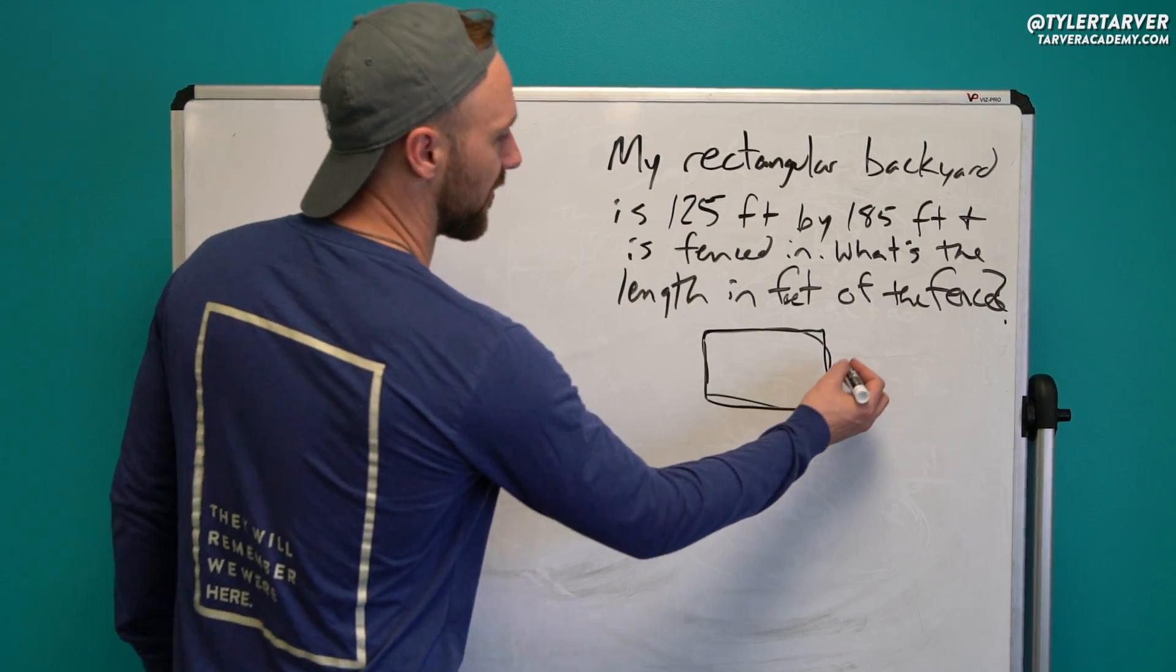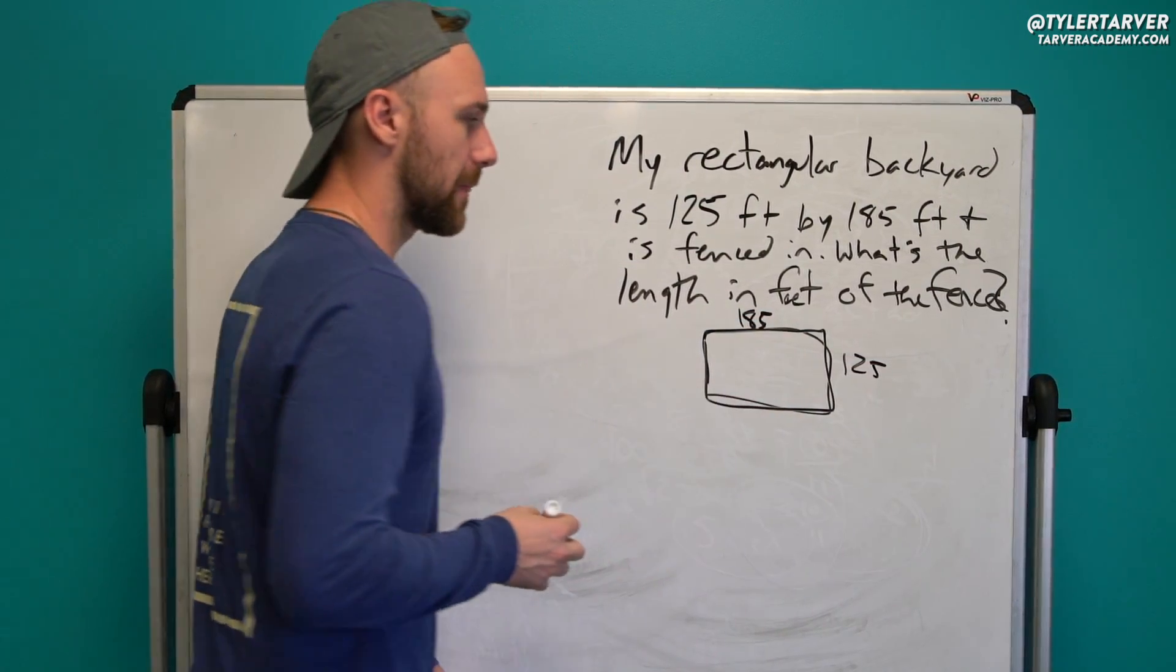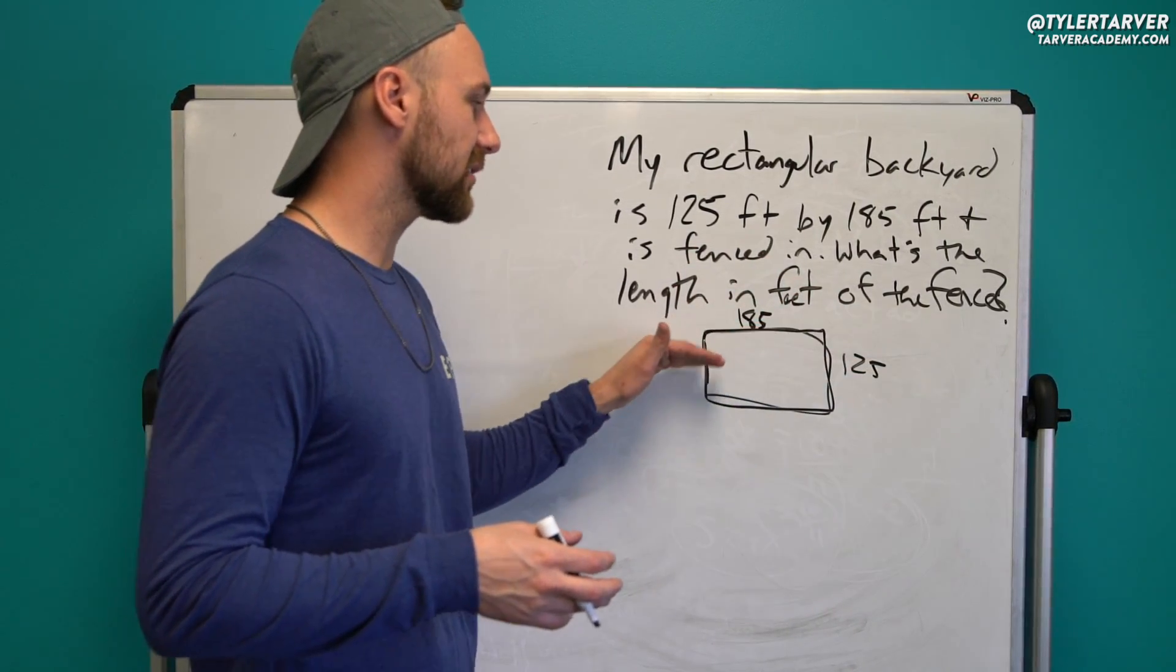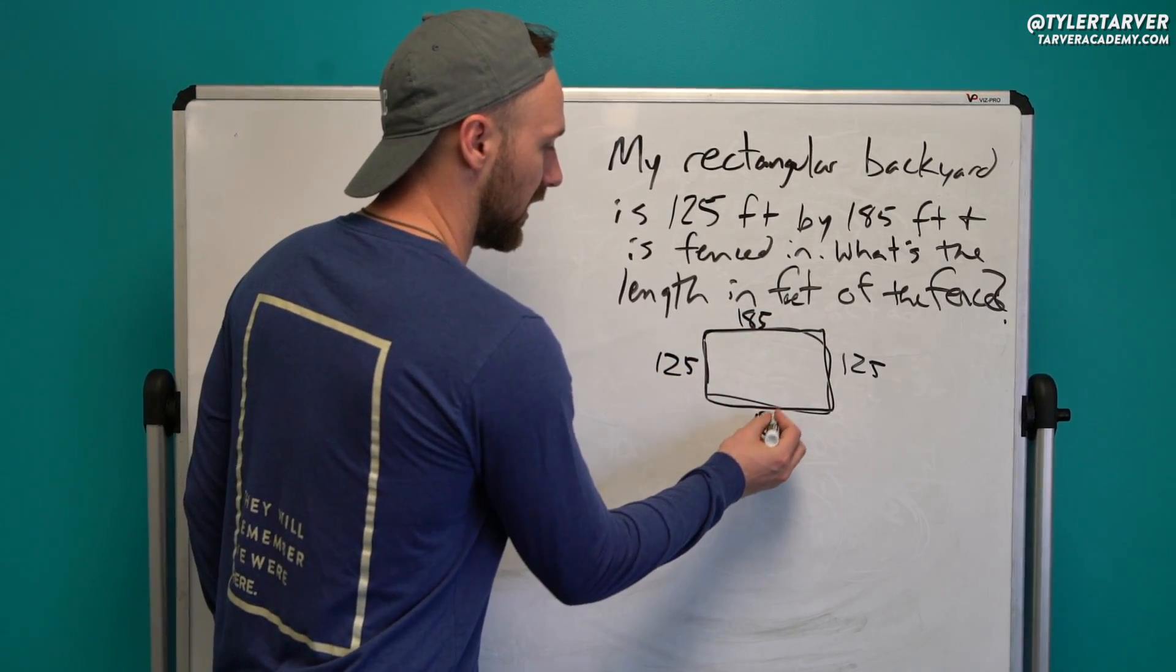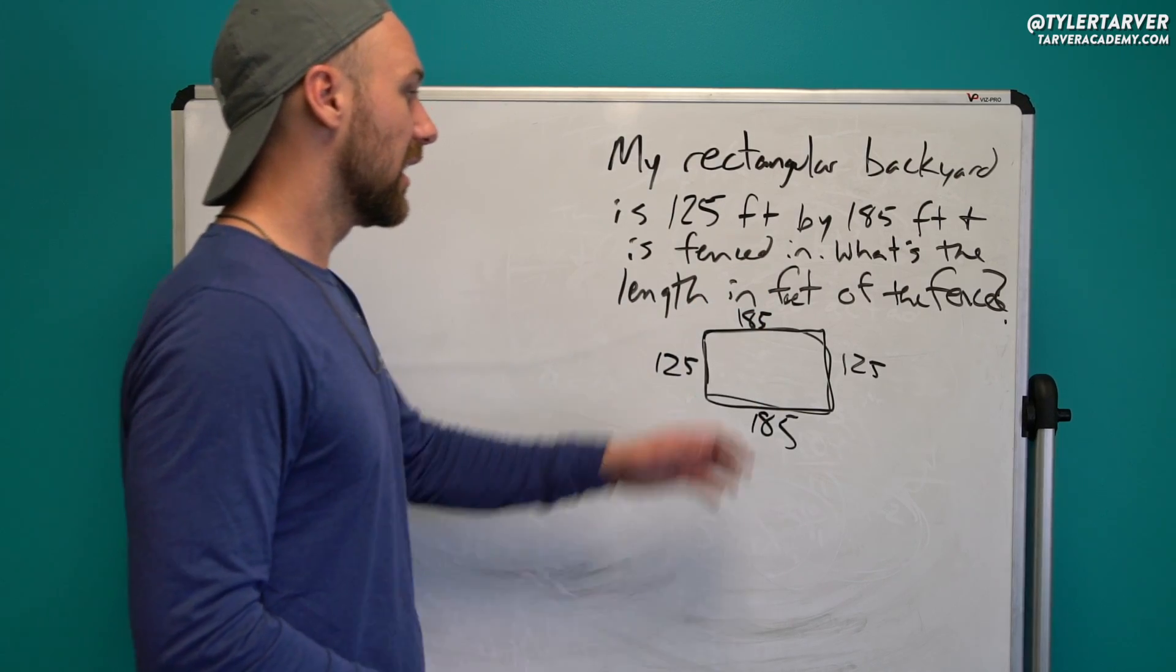Okay. So we've got 125 feet by 185 feet. Now, if it's a perfect rectangle, I know that my sides that are opposite each other are the same length. 185. 125s are opposite each other. 185s are opposite each other, and that's it.